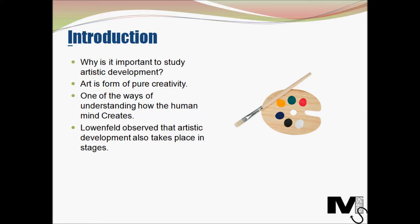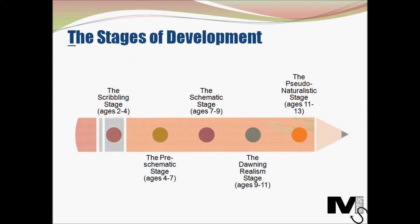One of the first and most significant contributions to the field of artistic development was done by Victor Lowenfeld. He observed that just like cognitive or social development, artistic development also takes place in stages. To come up with these stages, Lowenfeld studied thousands of children's drawings over several years.